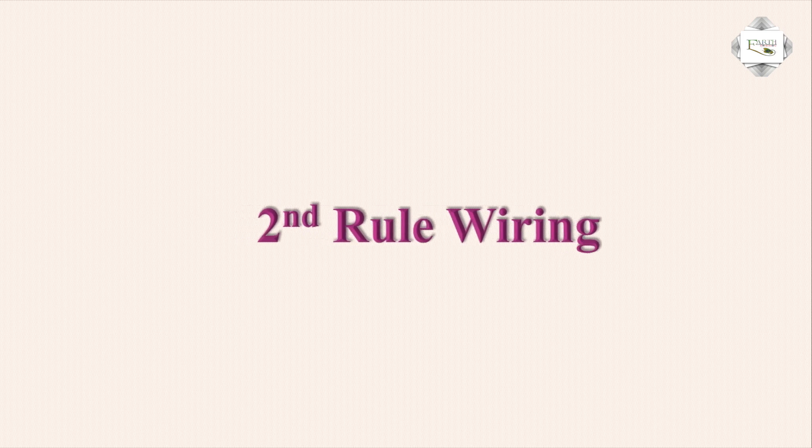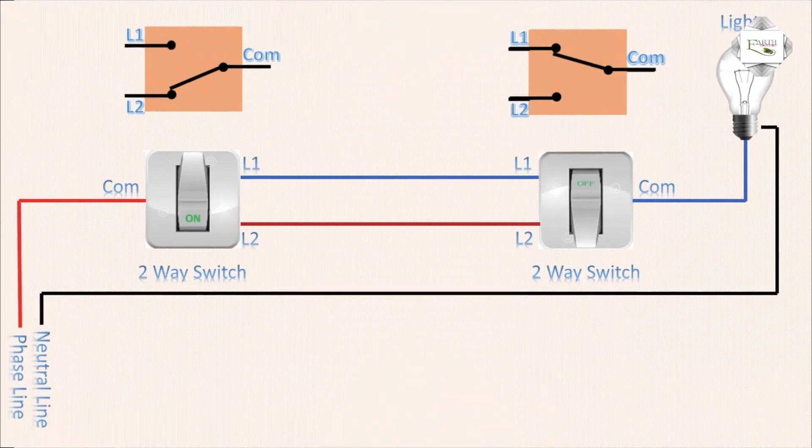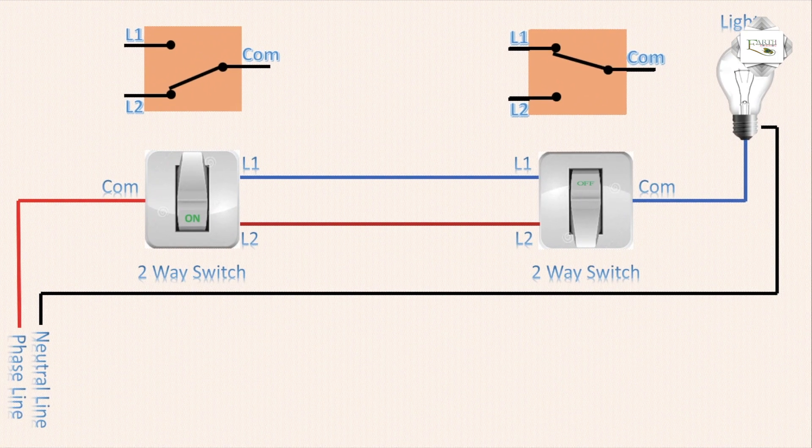Rule 2 is simpler. In the second rule, phase line input goes to common, common outgoing. L1 and L2 are the same - shorted on two switches. Any switch on or off turns the light on or off.